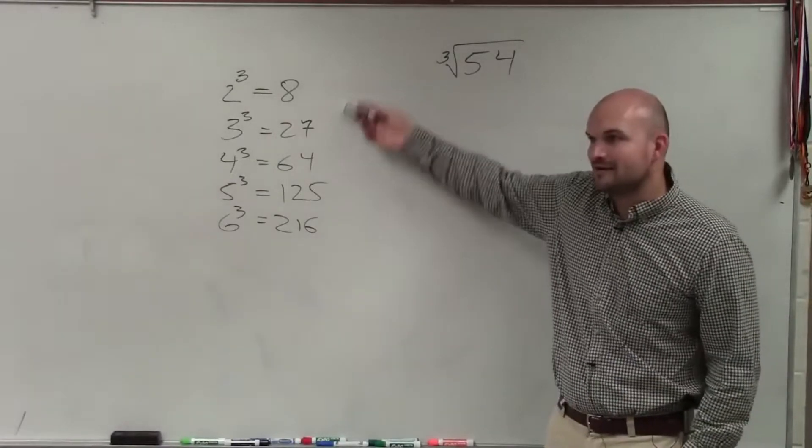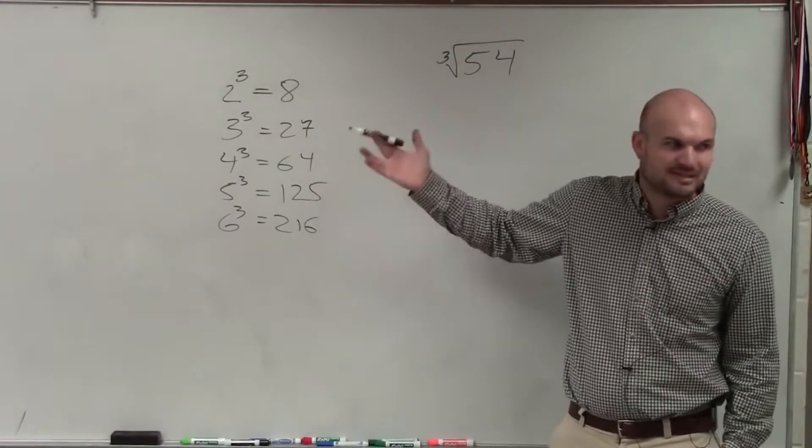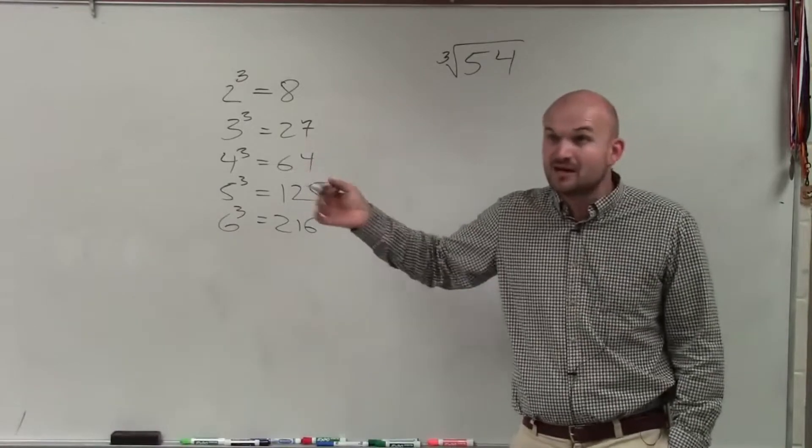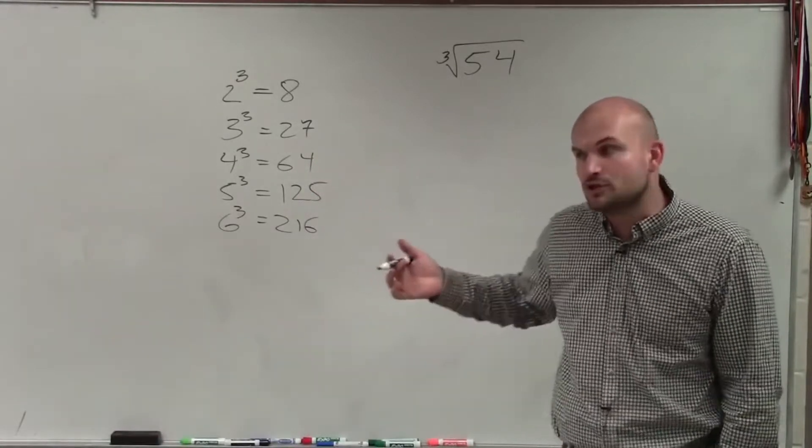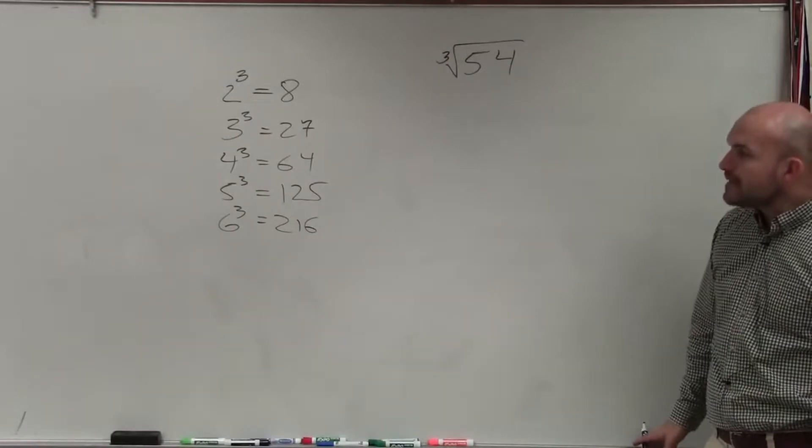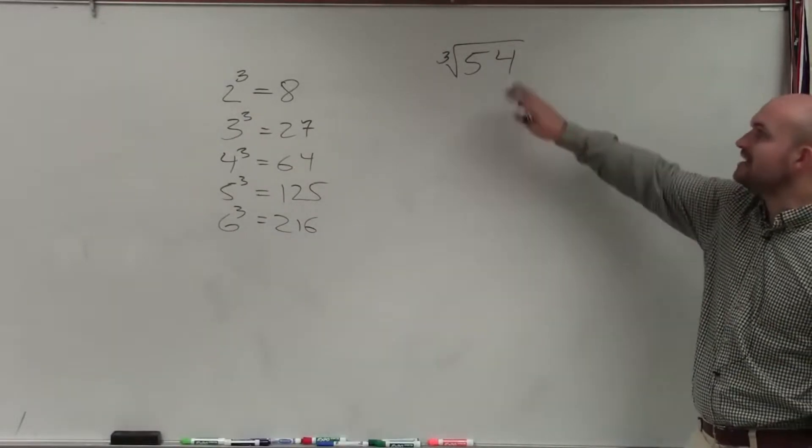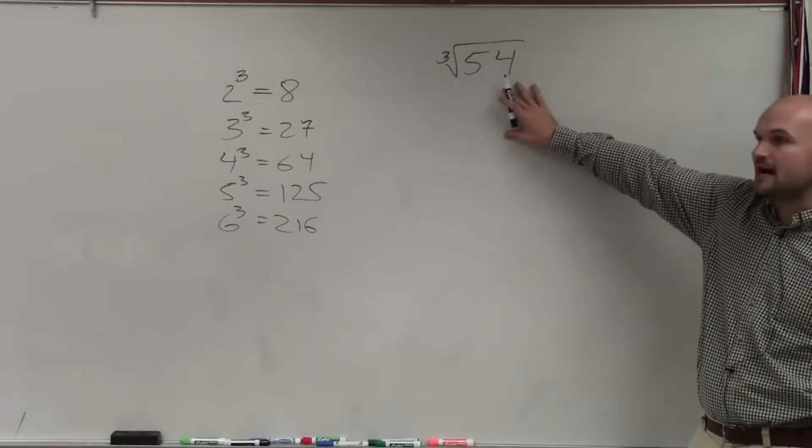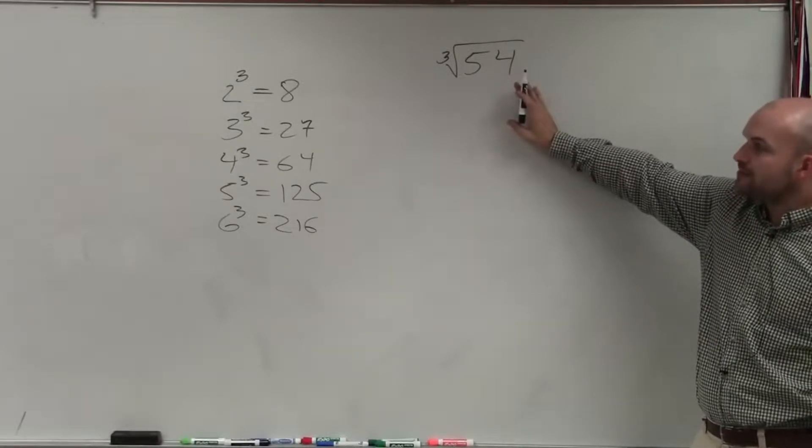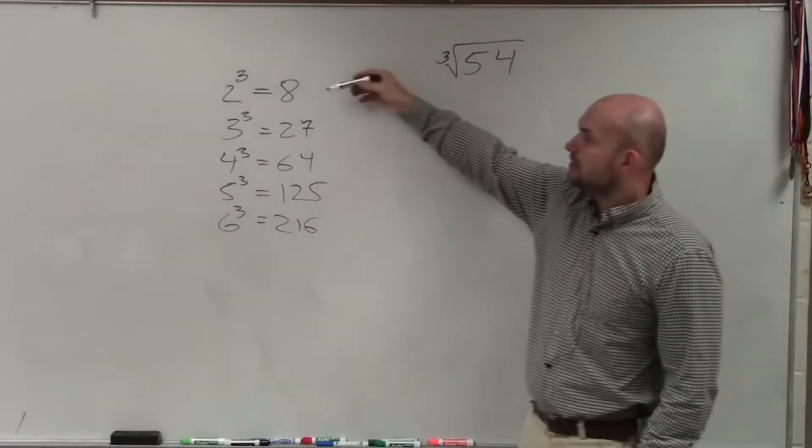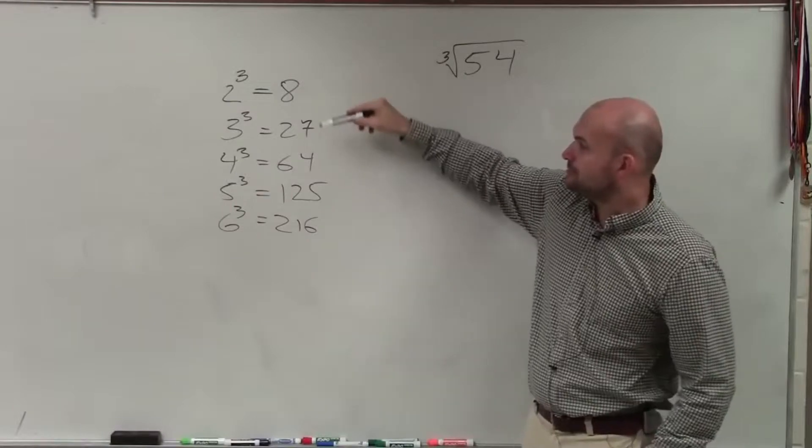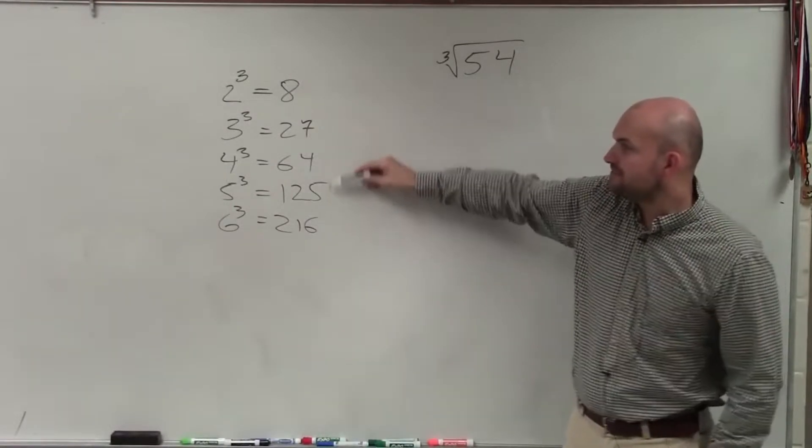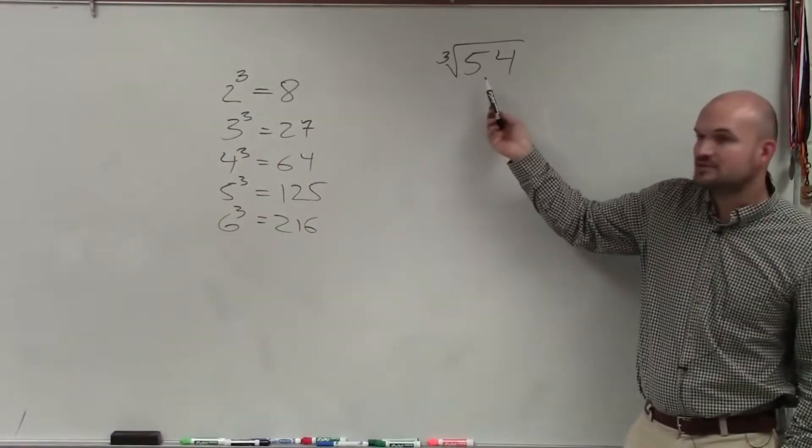Hence why I already have these memorized, because we don't really get up to 7 cubed, 8 cubed, 9 cubed. We do for square roots but not really for the cube numbers. So when I'm looking at this, if I want to simplify cube root, yes we could prime factor 54, there's not a problem with doing that. However, I always think it's simpler or easier to be able to determine which of these numbers divides into 54.